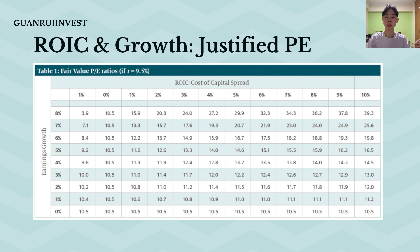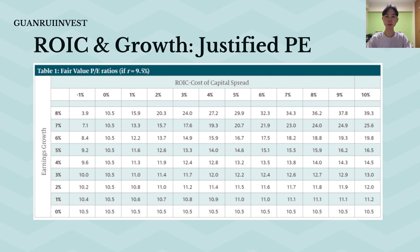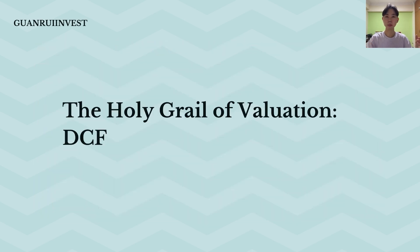Another method to determine whether a stock is undervalued is to use the ROIC and growth calculation to find your justified P ratio. The higher your ROIC and the higher your growth rate, the higher the justified P ratio. If the company's P ratio is below the justified P ratio, the company is undervalued; if above, it's overvalued.